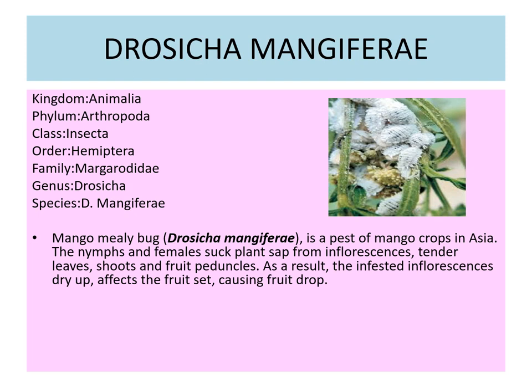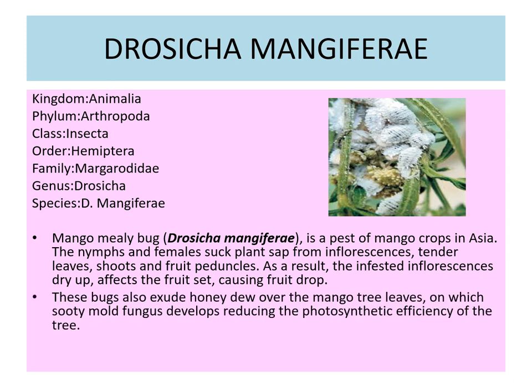Mango mealy bug is a pest of mango crop in Asia. The nymph and female suck plant sap from inflorescence, tender leaves, shoots, and fruit peduncles. As a result, the infested inflorescence dries up, affecting the fruit set and causing fruit drop. The bugs also exude honeydew over the mango tree leaves on which sooty mold fungus develops, reducing the photosynthetic efficiency of the tree.